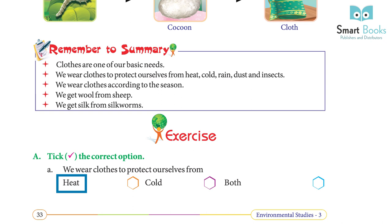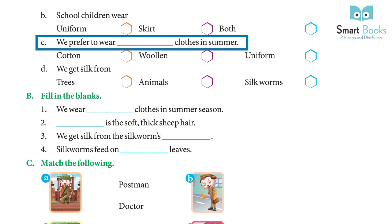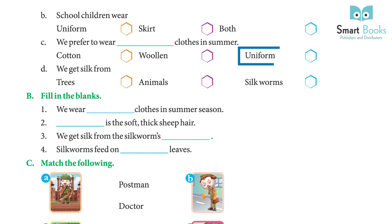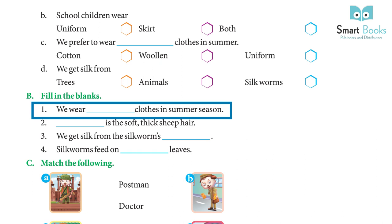Exercise A — Choose the correct option: a) We wear clothes to protect ourselves from heat, cold — answer: both. b) School children wear — answer: uniform. c) We prefer to wear dash clothes in summer — answer: cotton. d) We get silk from — answer: silkworms.